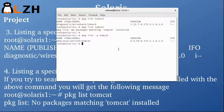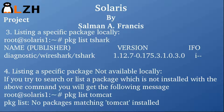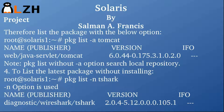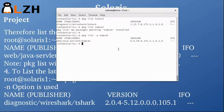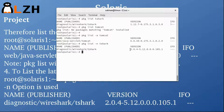To list the latest package without installing it — if you want to check what the latest version of a specific software is — you use the command 'pkg list -n'. This checks the newest package without installing it. Running 'pkg list -n tshark' shows that tshark 1.12.7 is currently installed, and the newest available version is 2.04.5.